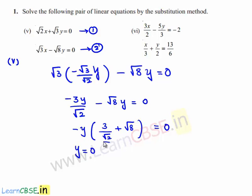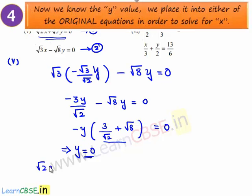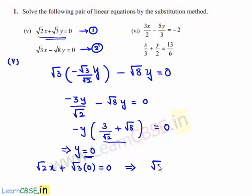Since the term 3 divided by root 2 plus root 8 is not equal to 0, obviously y must be equal to 0. Now substitute y is equal to 0 in equation number 1. We get root 2 times x plus root 3 times 0 is equal to 0, which implies root 2 times x is equal to 0. That is nothing but x is also equal to 0.